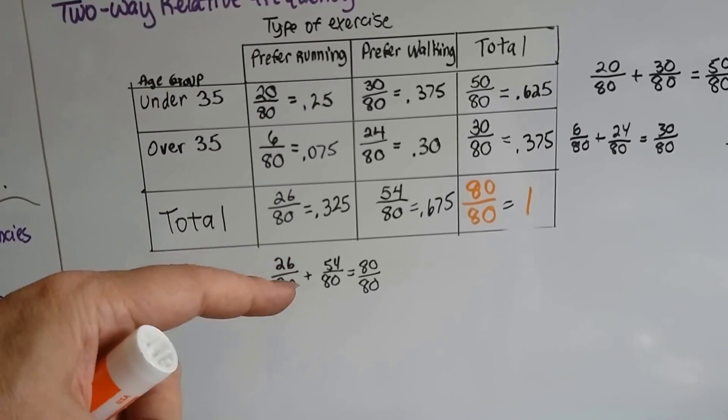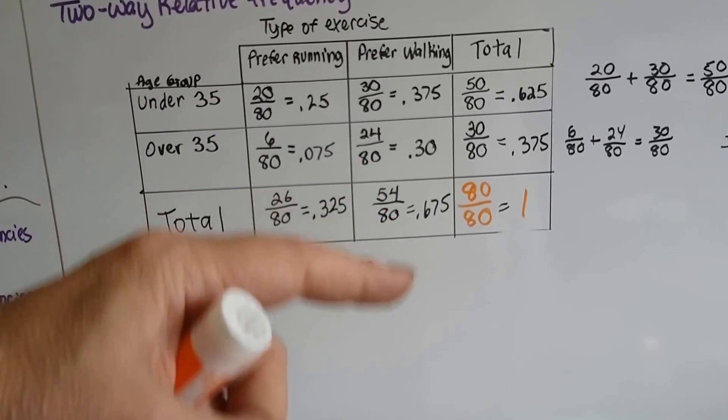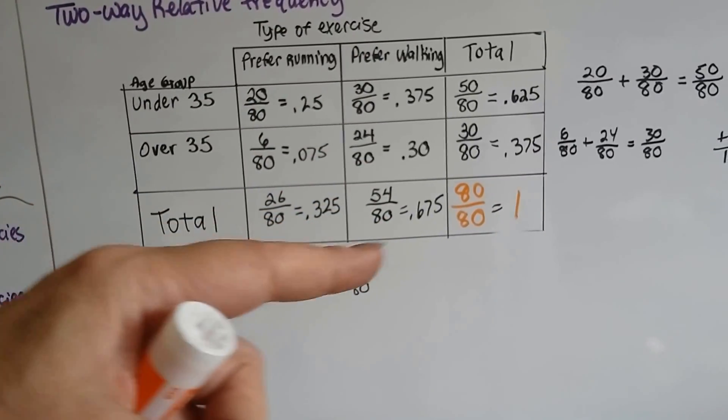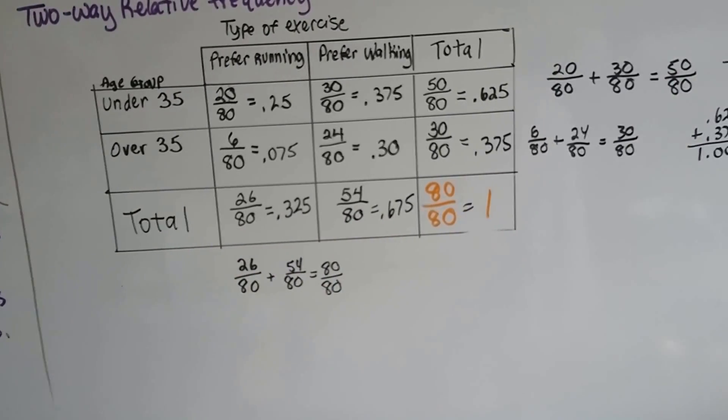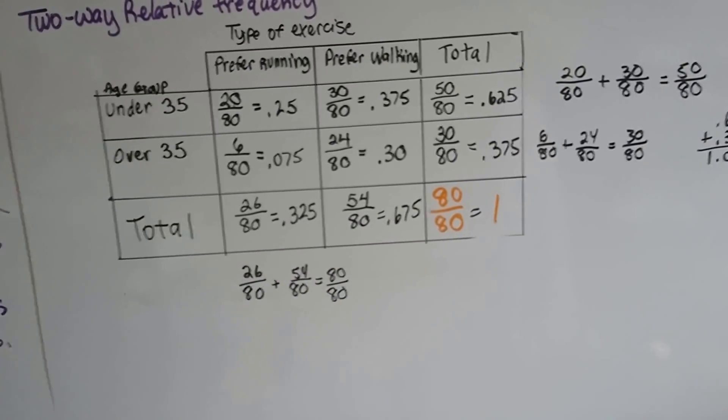And when we add these coming down, we get 0.325 and 0.675, and when we add those together, we get 1.000.